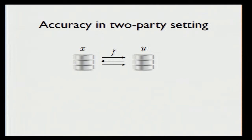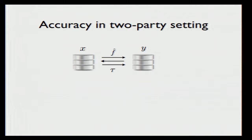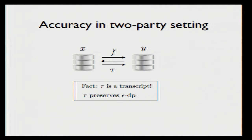Let's go back to the interactive setting. To obtain our bounds on the accuracy, we are going to analyze the transcripts of differentially private protocols — this is going to be our main object of focus. In particular, we are going to focus on two conditions: the first is the fact that tau was obtained via an interaction, and second, because tau is a transcript, it's part of the view, and therefore it must satisfy the differential privacy constraint.